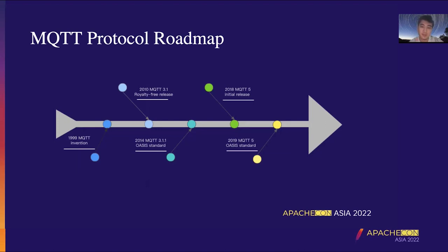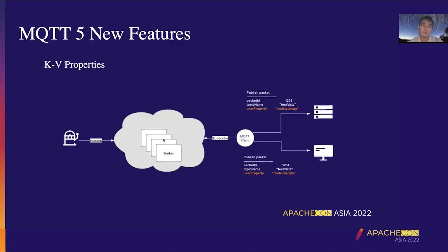Version 5 has made major changes on the basis of version 3.1.1 and is not backward compatible. Obviously there are too many new things to be introduced and all existing implementations need to be re-implemented. Version 5 is the most important protocol upgrade since version 3.1.1 in 2014. The new protocol can adapt to the new needs of the industry and also prepare the protocol for the future development of the Internet of Things industry. Next, we will introduce some of the more important changes in MQTT 5.